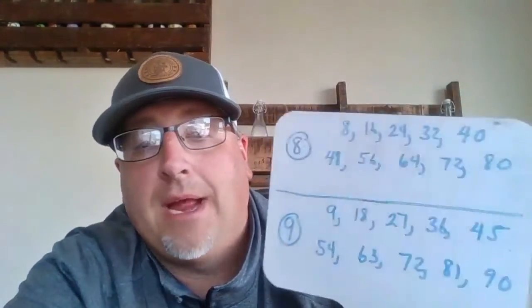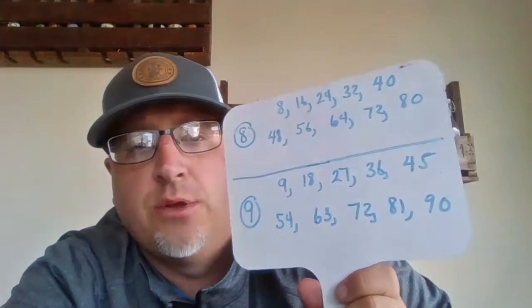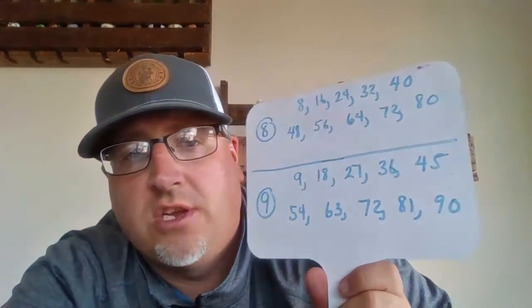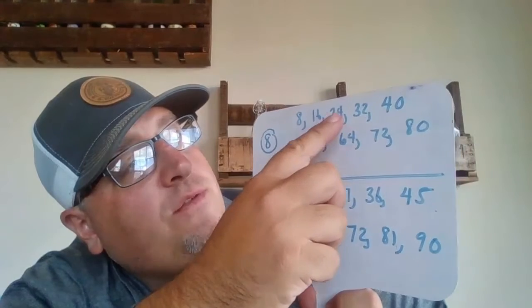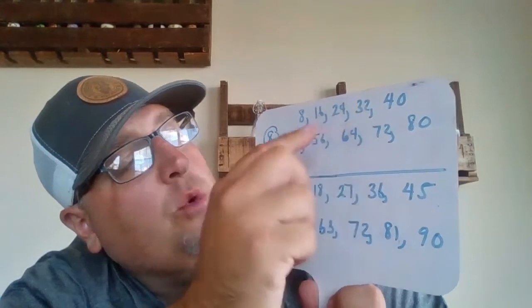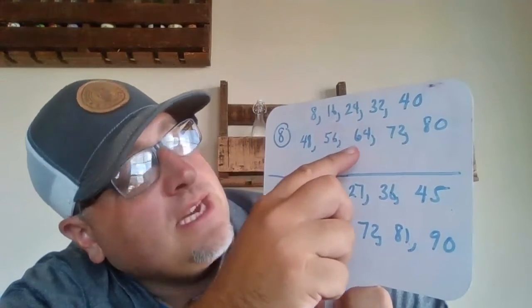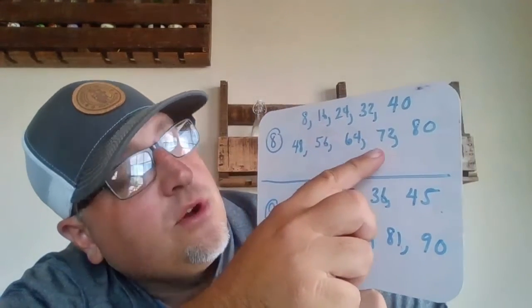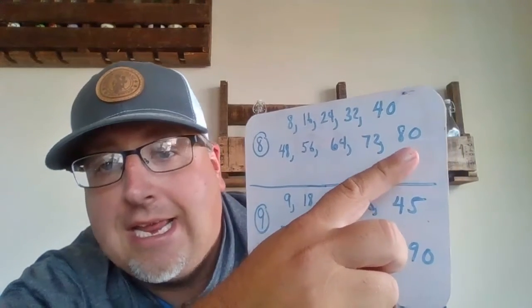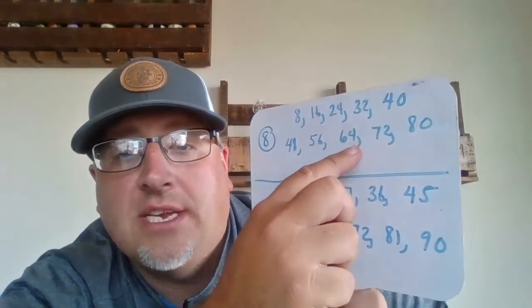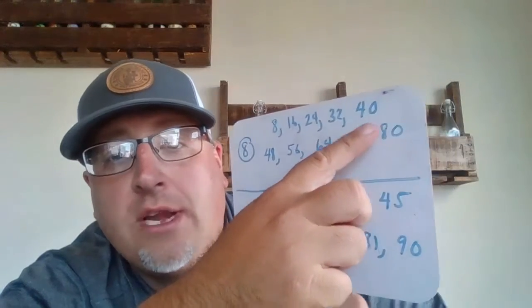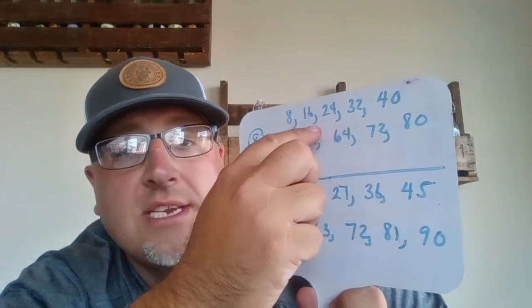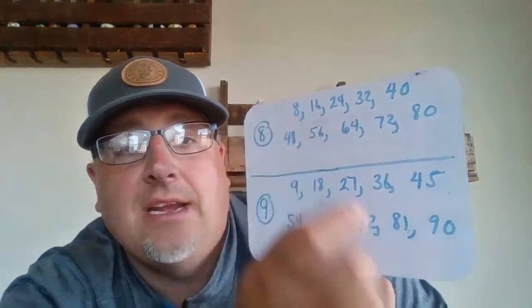We're going to count by 8s and count by 9s. I know this is a review, but it's good to practice. 8, 16, 24, 32, 40, 48, 56, 64, 72, and 80. Backwards: 80, 72, 64, 56, 48, 40, 32, 24, 16, and 8.